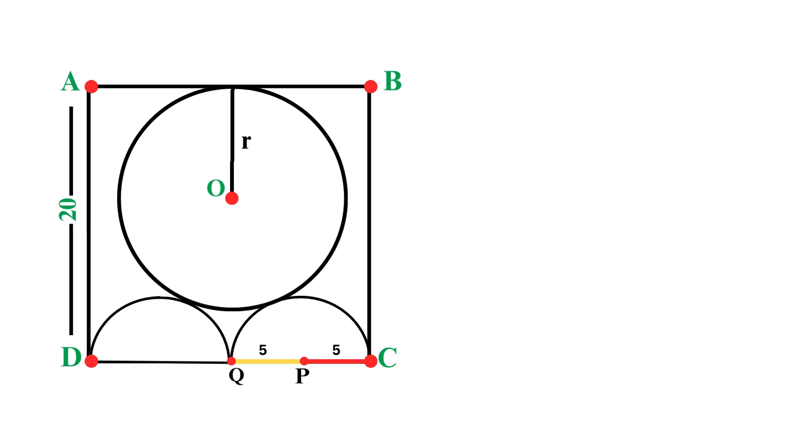Since this circle touches the top side of the square, the center O must be located at a distance R from the top side. This means the center O is at a vertical distance of 20 minus R from the bottom side. Here's why this is the case. Let me draw a vertical line from point O straight down to point Q. Now, if we look at the left side of our square, we can see it has a total length of 20 units.